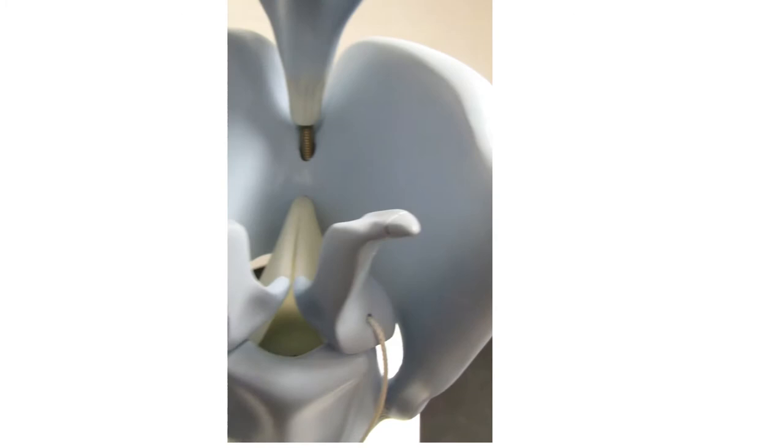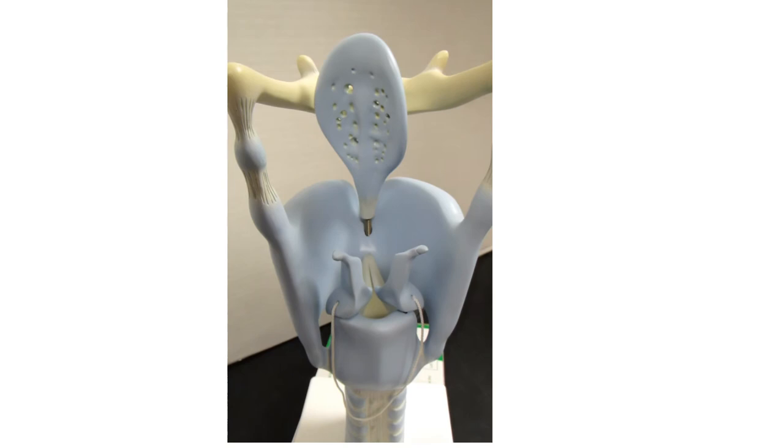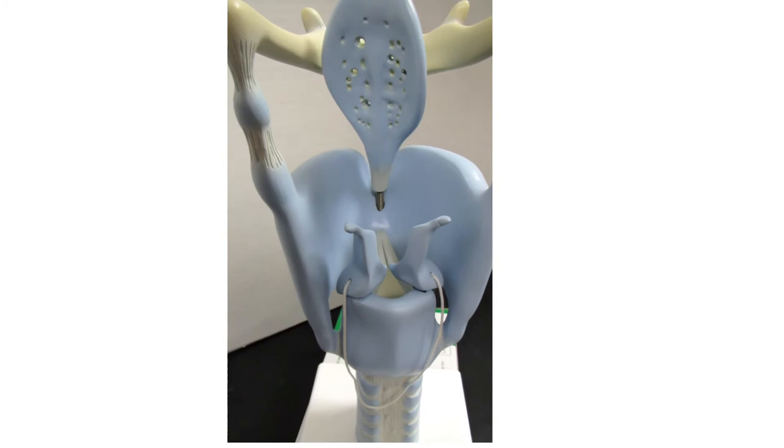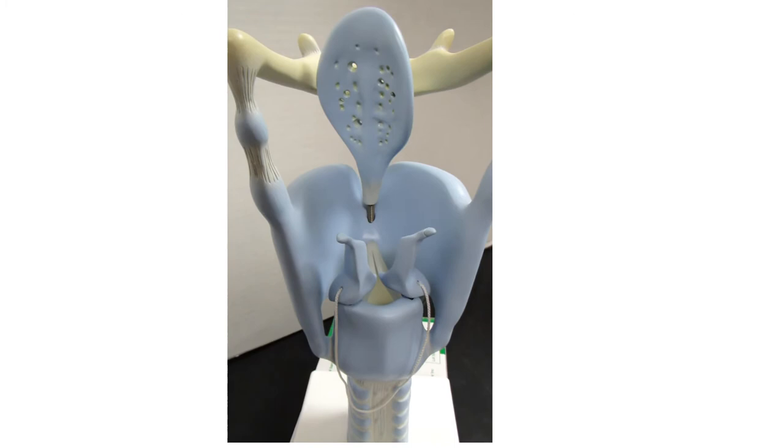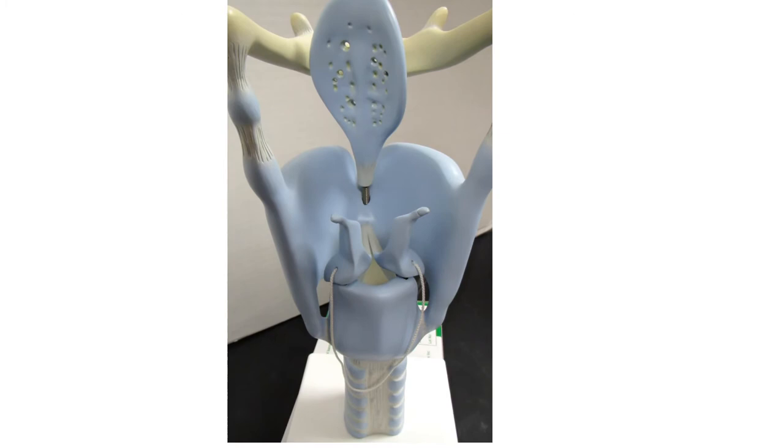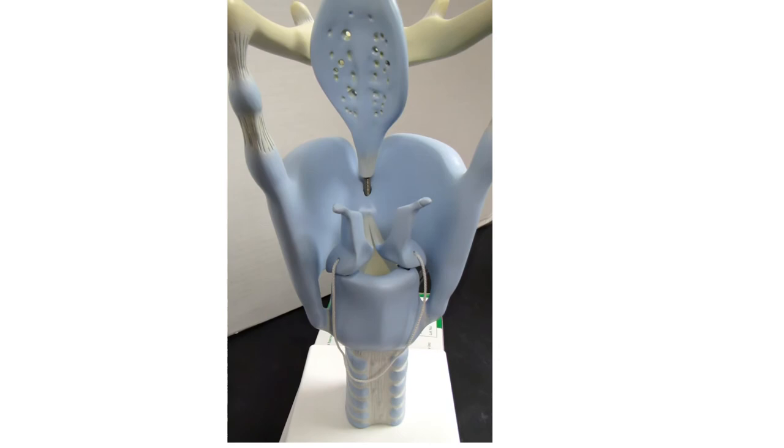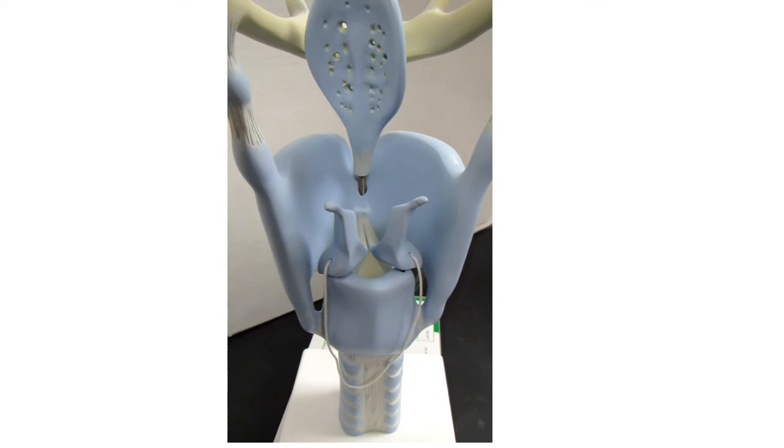The remaining two cartilages, the cuneiform cartilages, you cannot see on this model because they're embedded in one of the membranes. As I mentioned during the presentation, I will hold you responsible for knowing the bone and the cartilages. I'll let your lecture professors get you on the membranes.